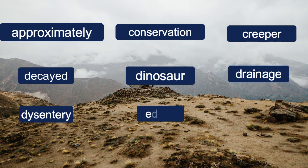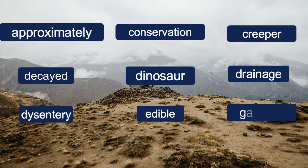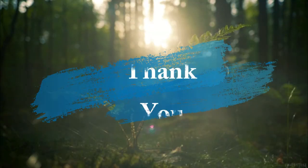E, D, I, B, L, E — Edible. G, A, R, B, A, G, E — Garbage. Thank you.